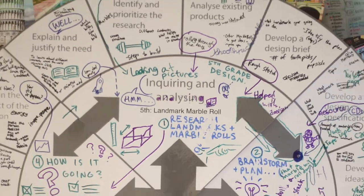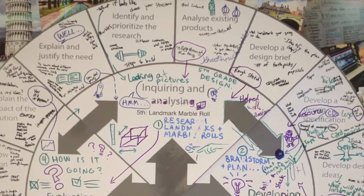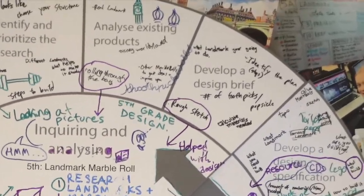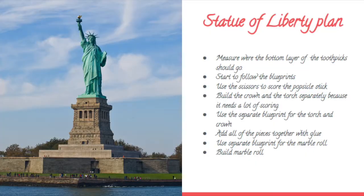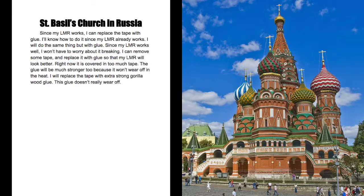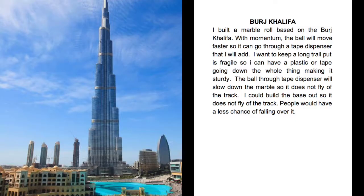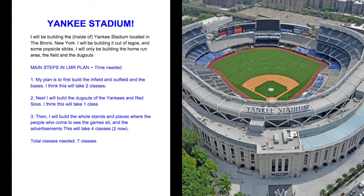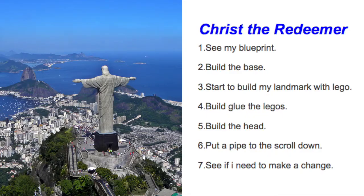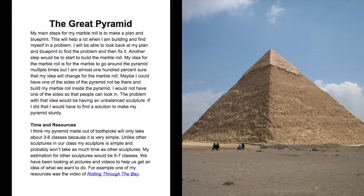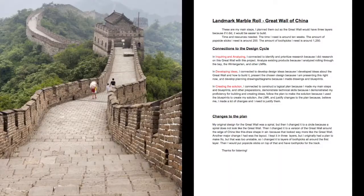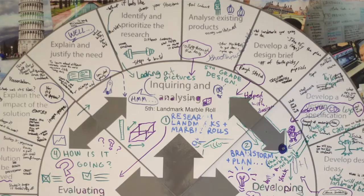I connected to the design cycle by developing a design brief. I chose to build a Statue of Liberty. My landmark was the St. Bezos Church. I chose to build the Burj Khalifa. The landmark that I did was Yankee Stadium. And I chose to build Christ the Redeemer. I chose to build the Pyramid. I chose to build the Great Wall of China.